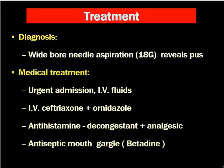The aspiration has to be done at the most dependent part. We draw an imaginary line — one horizontal through the base of the uvula and one vertical along the anterior pillar. At the upper outer quadrant of that imaginary cross, we insert the needle and aspirate. If foul-smelling pus comes on aspiration, diagnosis is confirmed.